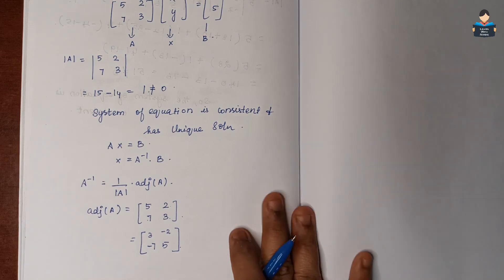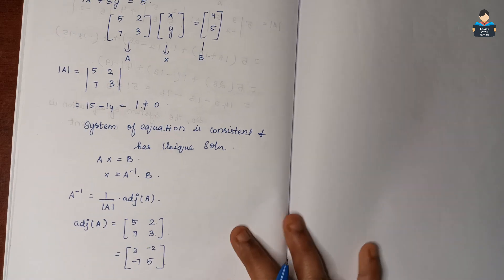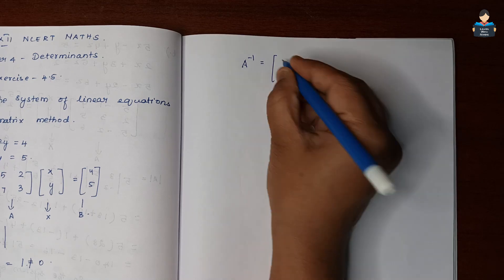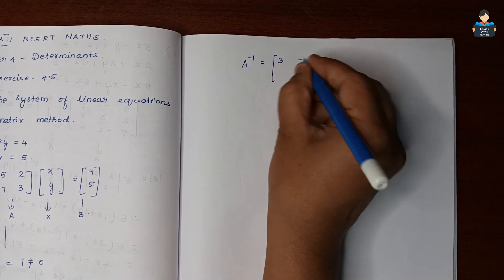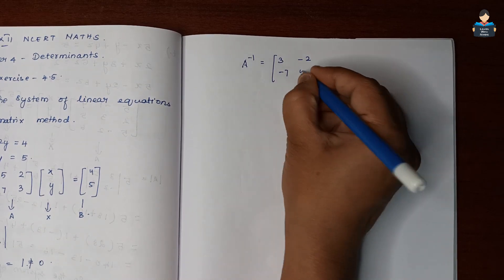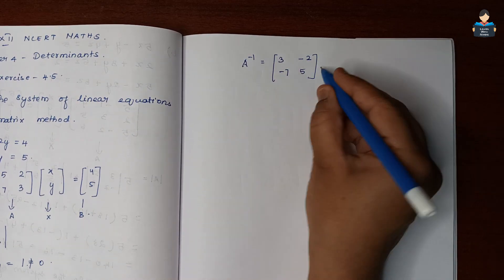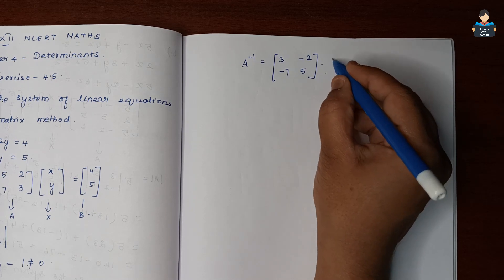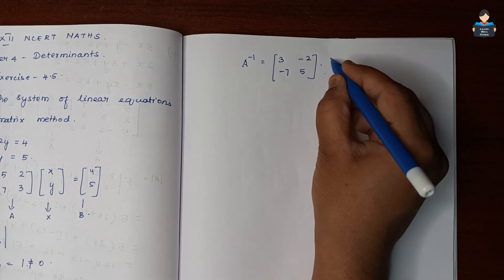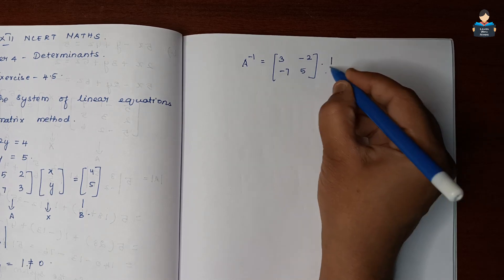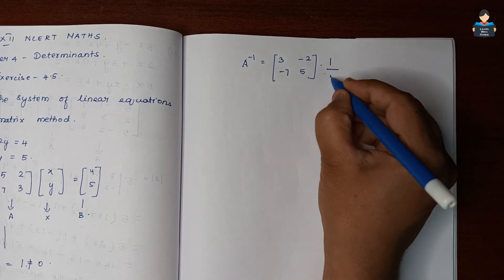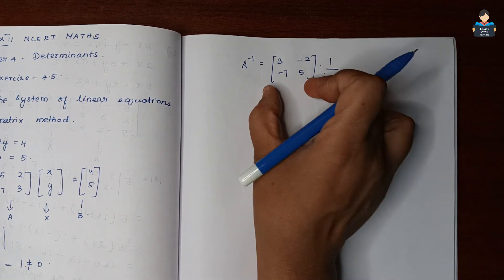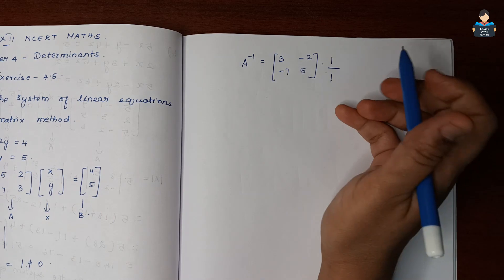Now A inverse. So A inverse is equal to [3, -2; -7, 5] multiplied by 1 over determinant of A, which is 1 over 1. So we will find out in this matrix.